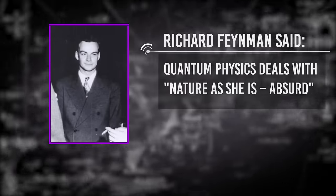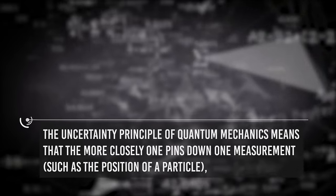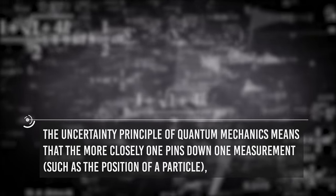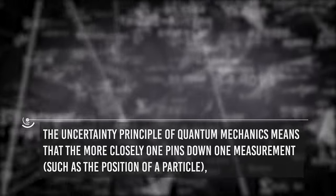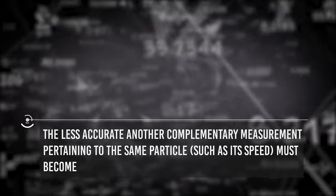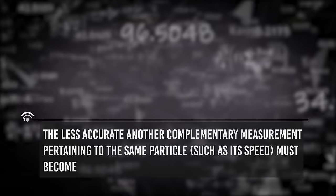Feynman said quantum physics deals with nature as she is absurd. For example, the uncertainty principle of quantum mechanics means that the more closely one pins down one measurement, such as the position of a particle, the less accurate another complementary measurement pertaining to the same particle, such as its speed, must become.